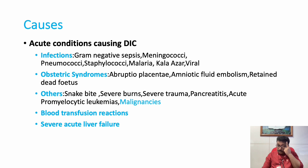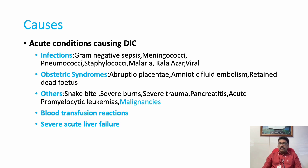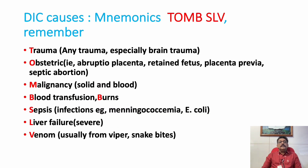Severe acute liver failure can also lead to DIC, though in liver disease mostly prothrombin time is elevated. To diagnose DIC, both PT/INR and APTT must be elevated. Liver disease alone does not produce coagulation defects due to DIC, but infections in a patient with chronic liver disease or severe liver failure can produce DIC. We can remember the causes with the mnemonic Tom SLV: Trauma, Obstetrics, Malignancy, Blood transfusion and Burns, Sepsis (especially gram-negative infection), Severe liver failure, and Venoms — mainly viper bite.